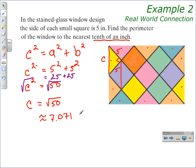Remember, we need to take that result and multiply it by 10 because there are ten lengths of c around the stained glass window. When we multiply 7.071 by 10, we get 70.71.